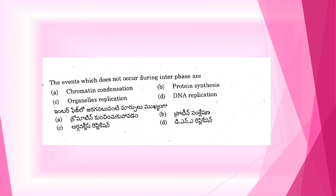Next question. The event which doesn't occur during interphase is: A. Chromatin condensation. B. Protein synthesis. C. Organelle replication. D. DNA replication. In the cell cycle, there are two phases: interphase and the mitotic phase, which is the actual division phase.